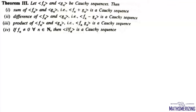There are some theorems on Cauchy sequences: let Fₙ and Gₙ be two Cauchy sequences, then their sum will be a Cauchy sequence, their difference will also be a Cauchy sequence, their product will also be a Cauchy sequence, and if Fₙ is not equal to zero, then 1/Fₙ is also a Cauchy sequence.